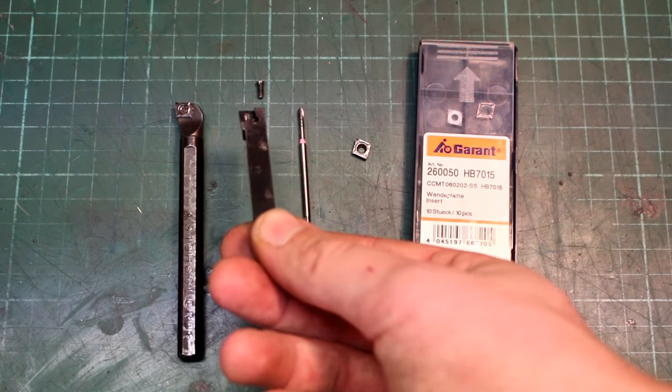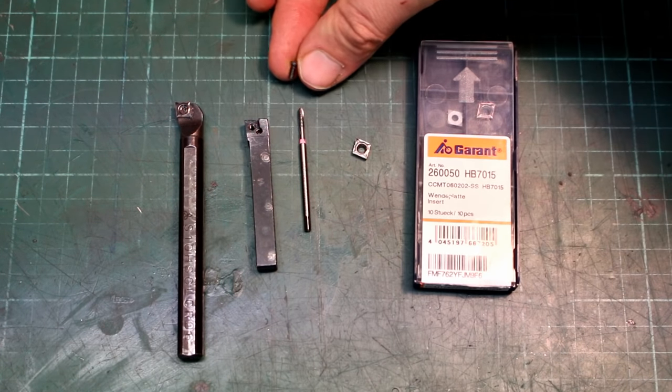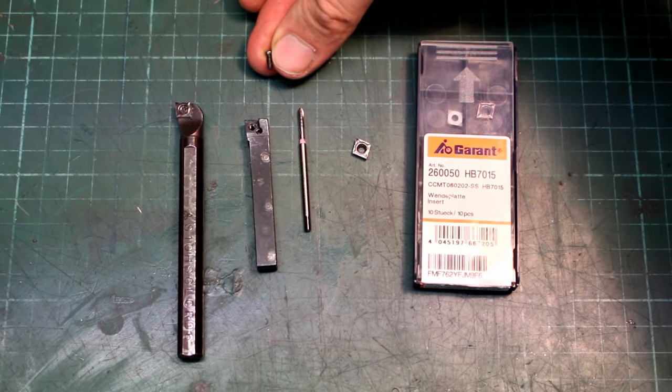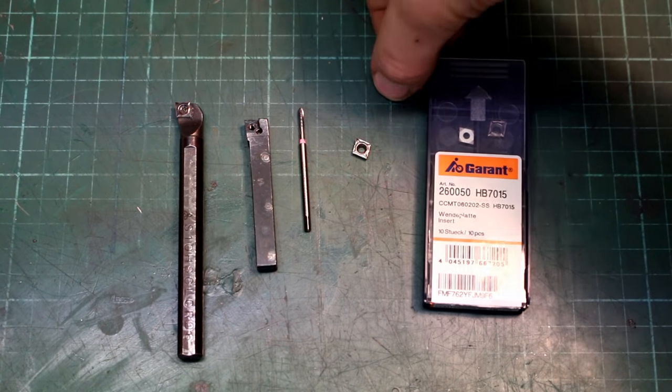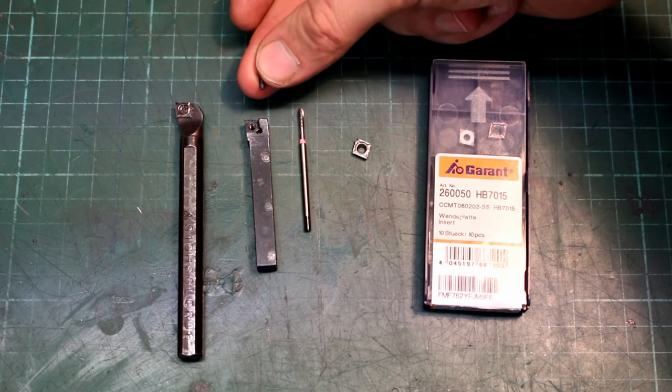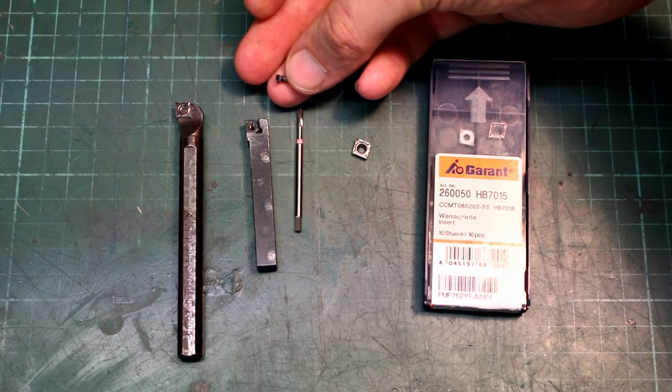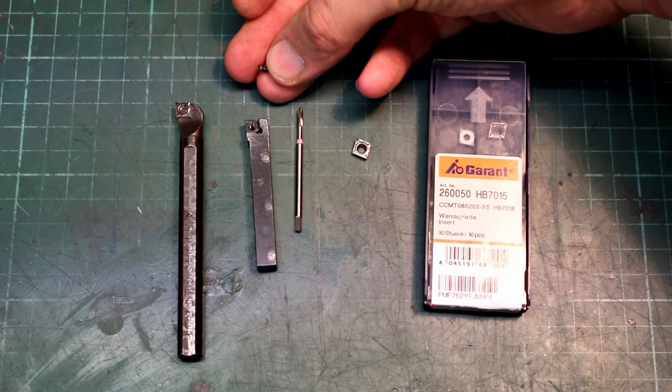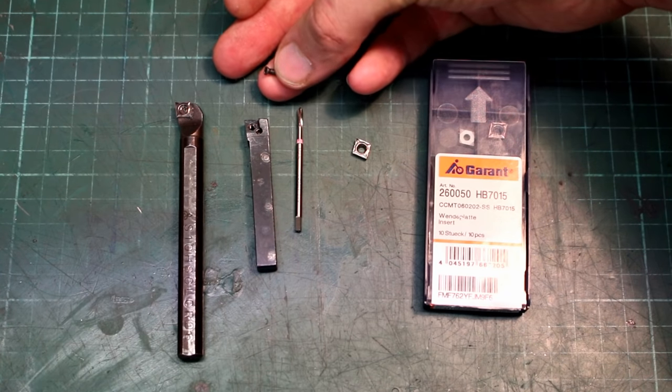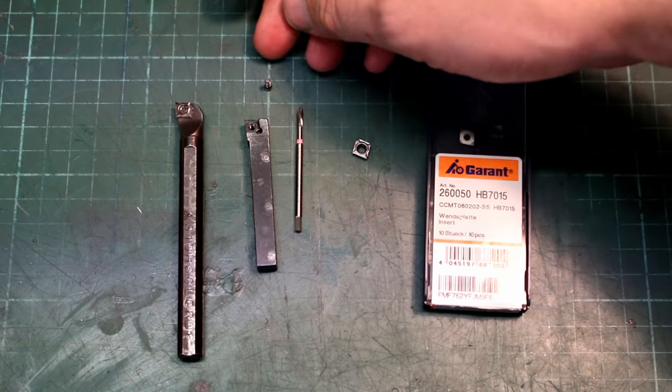Pretty standard 8mm shank. The screw for these inserts is an M2.5 screw with a Torx head. These little buggers are super expensive. They cost real money. You can buy them one at a time or in packs of 10. And you really have to put down some money to get these. So don't lose them.